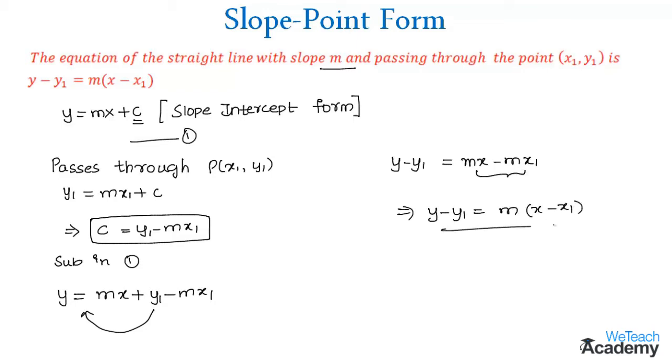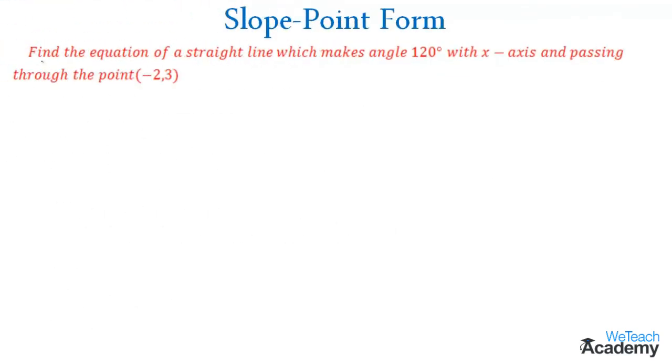This is the equation of the line with slope m and containing the point (x1, y1). Now let us proceed and discuss one example.